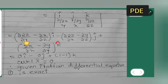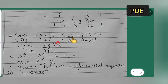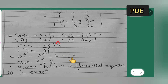Evaluating each term: differentiating 2z with respect to y gives 0, and differentiating x with respect to z gives 0, so the i component is 0. Differentiating 2z with respect to x gives 0, and differentiating y with respect to z gives 0, so the j component is 0. Differentiating x with respect to x gives 1, and differentiating y with respect to y gives 1, so the k component is 1 − 1 = 0. Therefore curl of X-bar equals 0.